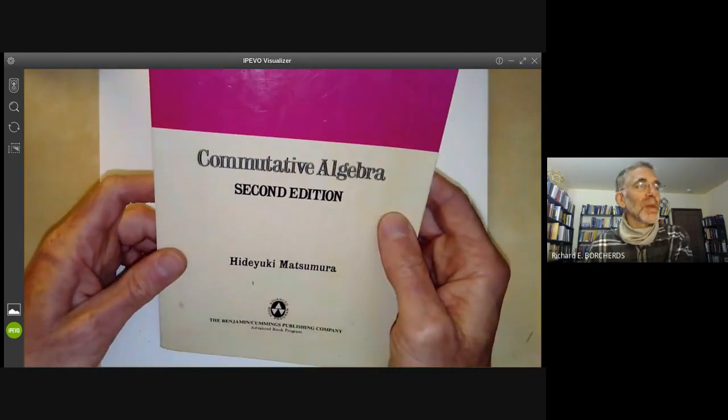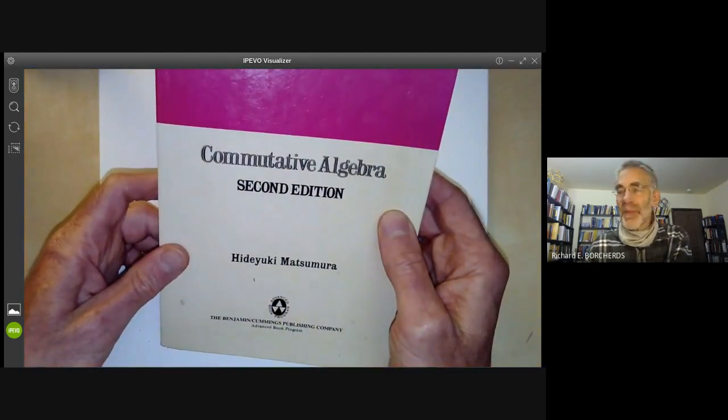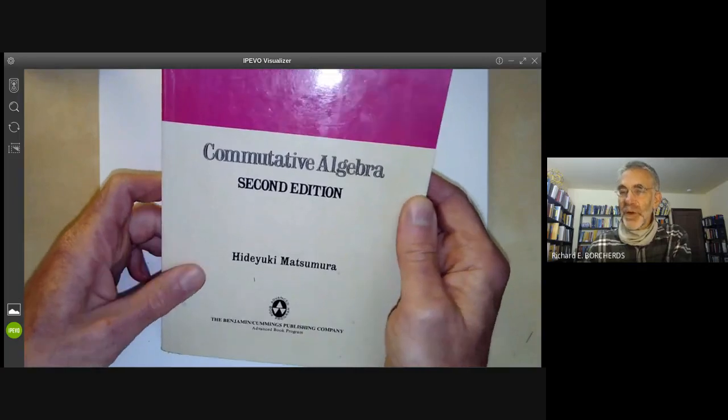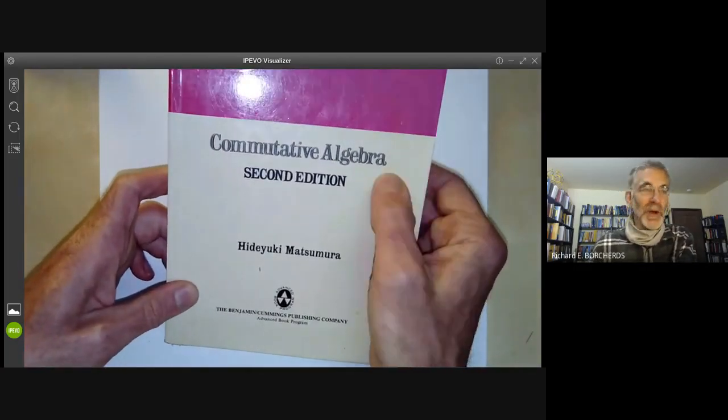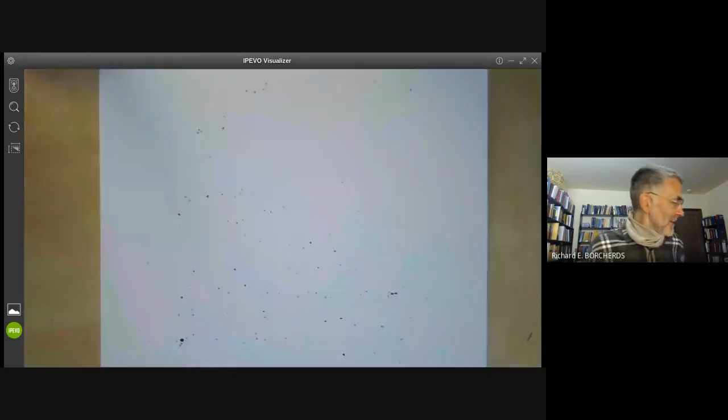Then there's the book Commutative Algebra by Matsumura, which is one of the books used by Robin Hartshorne in his algebraic geometry book as a reference for commutative algebra. That's one of the few books that actually contains a definition of an excellent ring and we're not going to be covering excellent rings in this course because I can never actually remember the definition of an excellent ring.